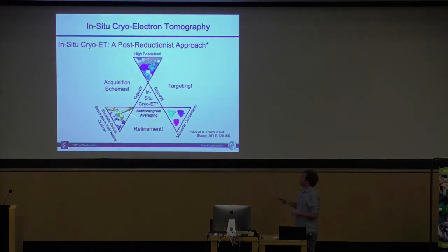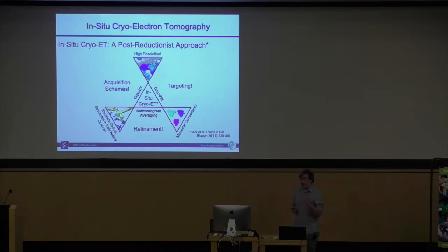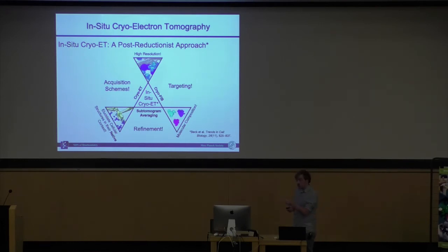So finally, this trinity of cryo-ET, cryo-FIB, and subtomogram averaging — you've seen today already you can get higher resolution. I hope I was able to show you that you can also use it to look at things that might happen only once per cell, and maybe not only in individual cells — we're now at the point where we can start really working with tissue. It will take some more time to optimize, but this is really where we can go now.